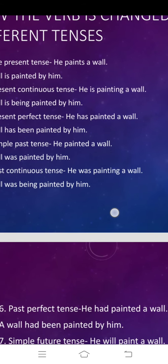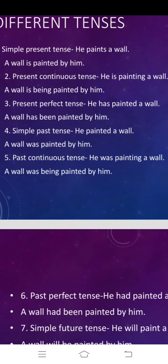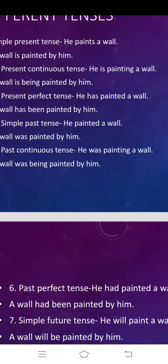Third: present perfect tense. In this, 'been' has to be used. For example, he has painted a wall. 'Has painted' tells us the sentence is in present perfect tense. So the answer is: a wall has been painted by him.